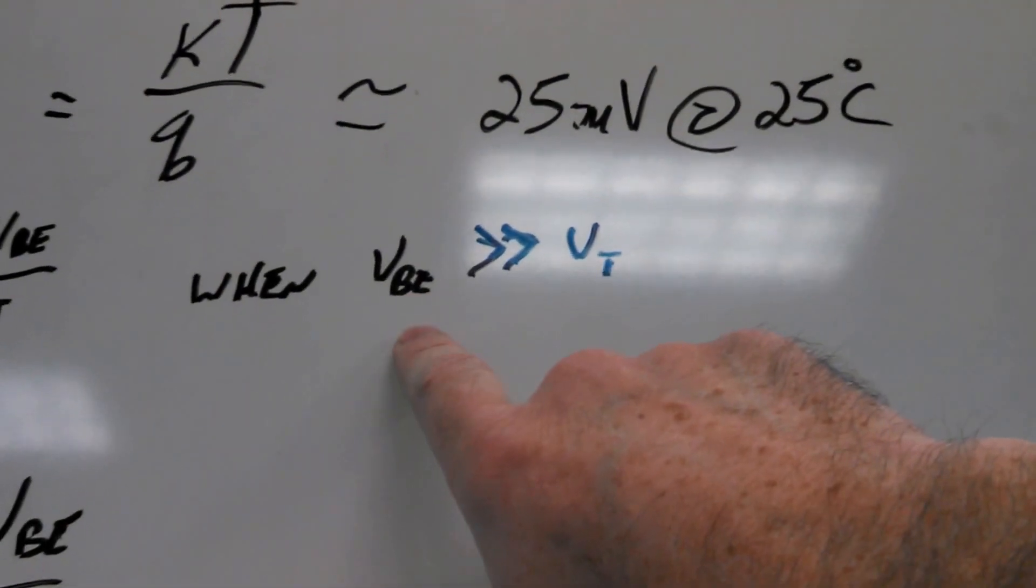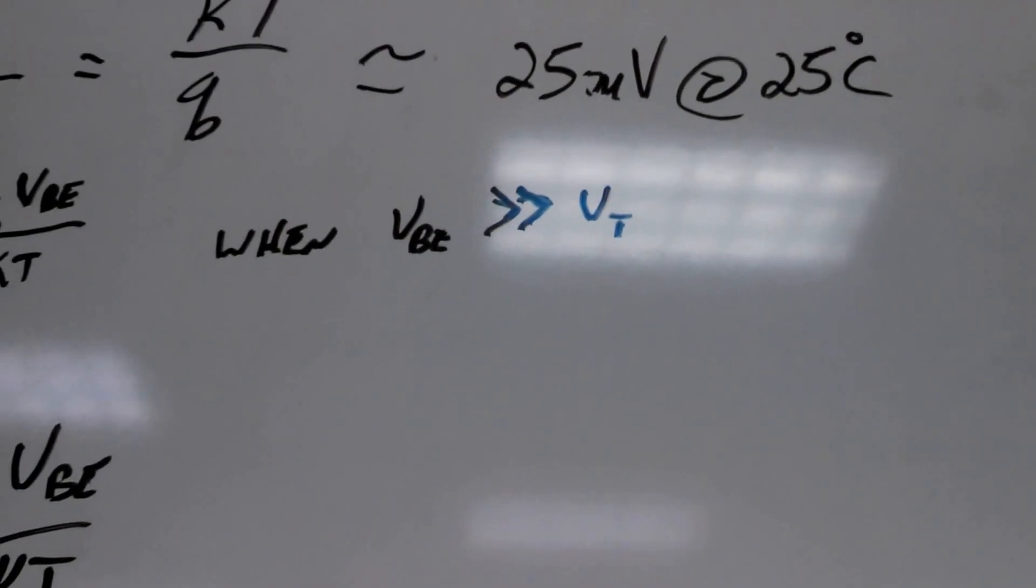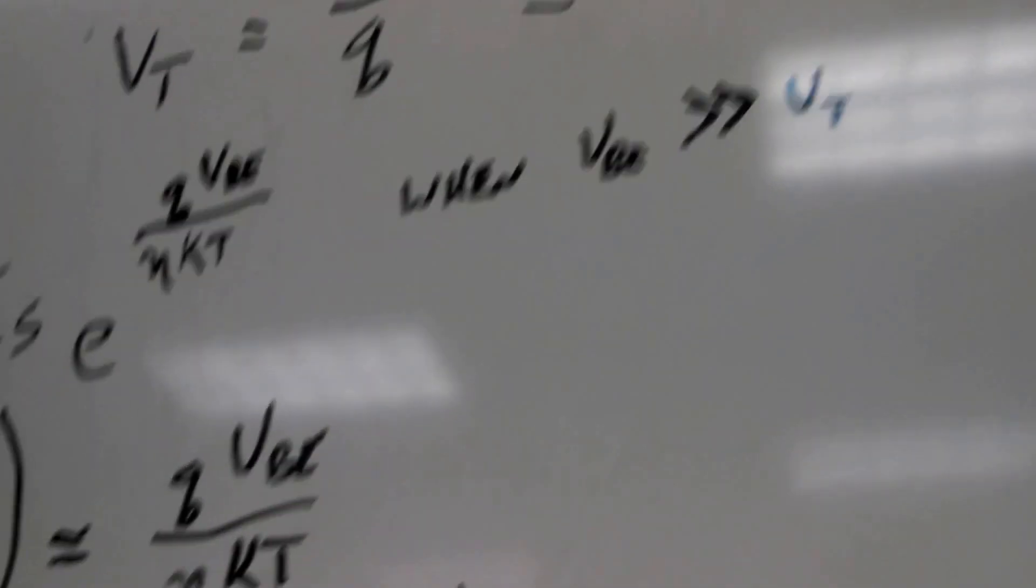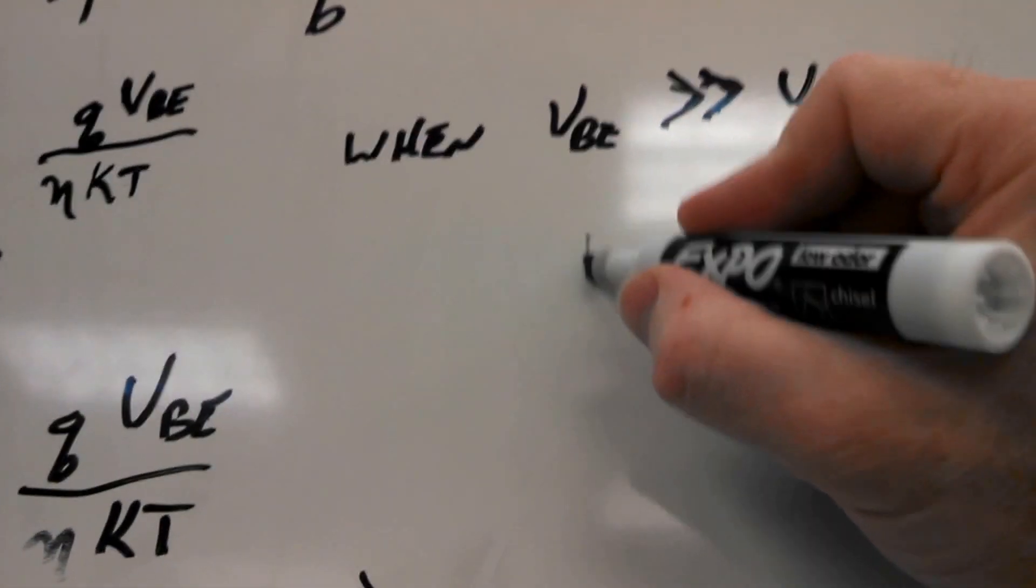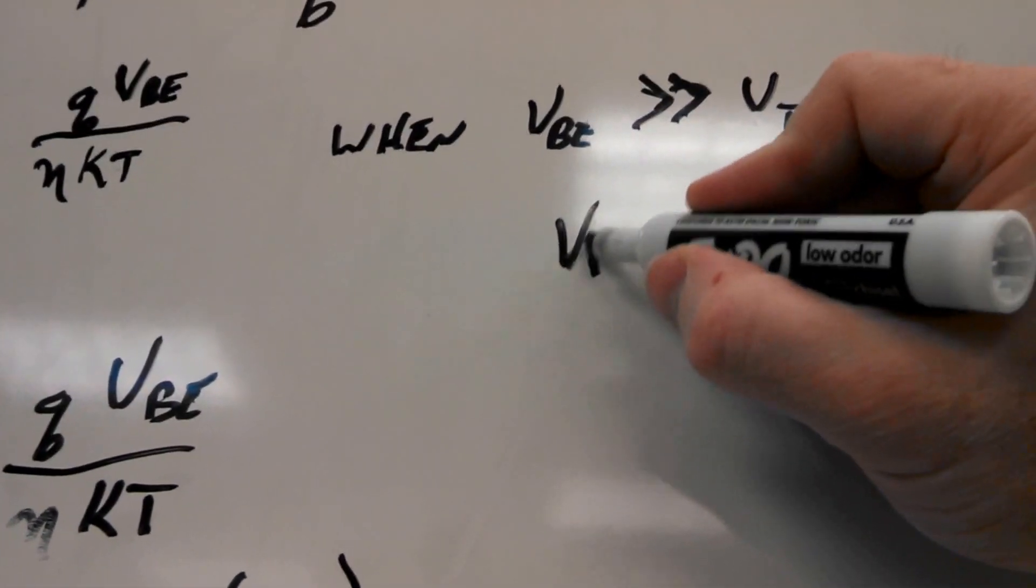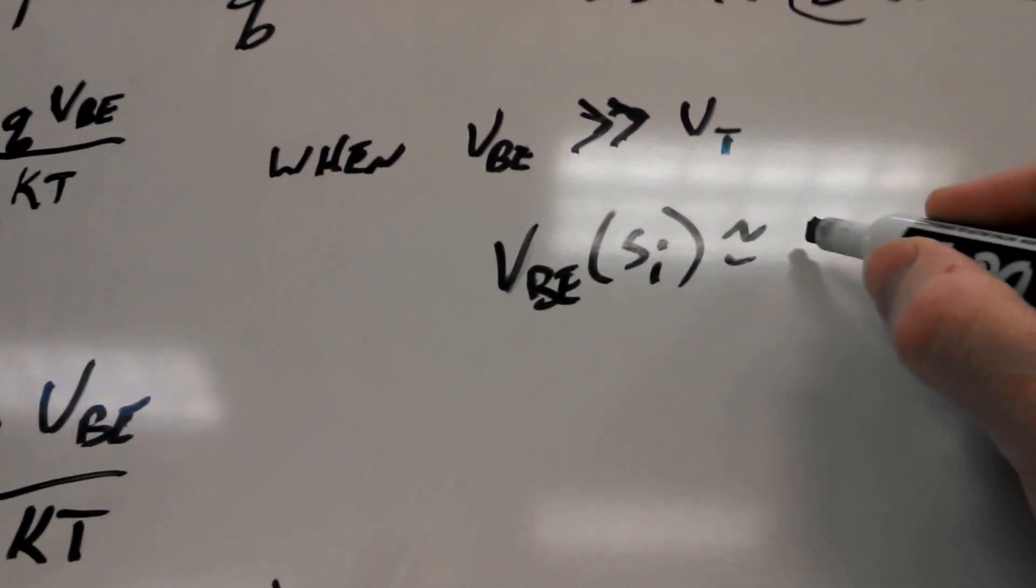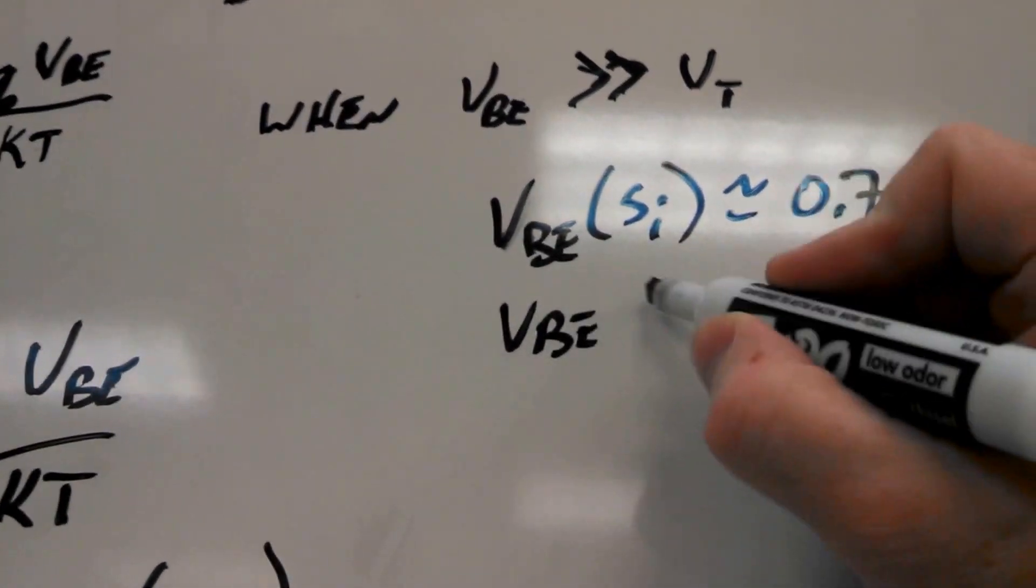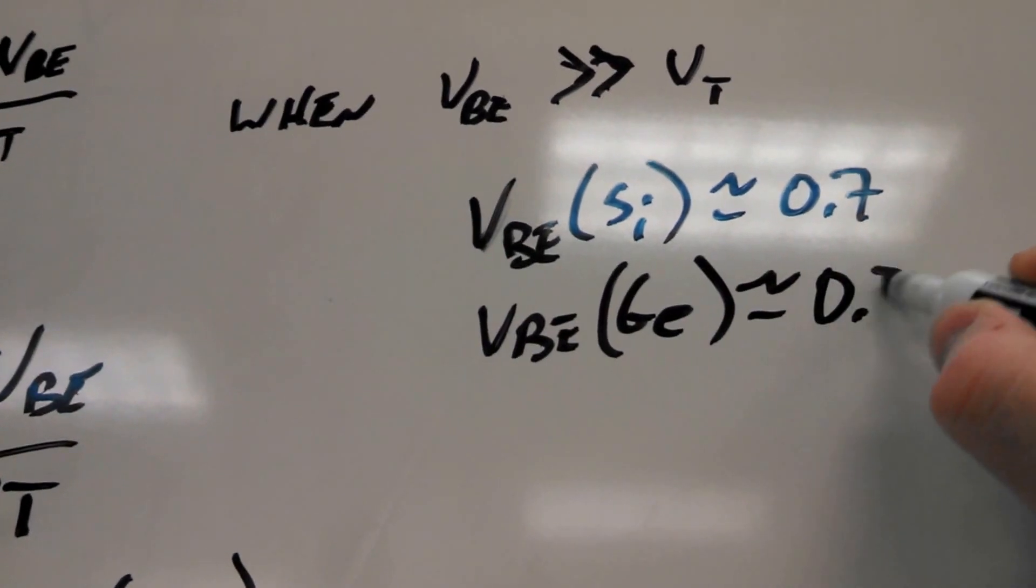When VBE is much greater than VT, it's usually about 0.7 volts for silicon and about 0.3 volts for germanium. So we'll write that on here too. VBE of silicon approximately equal to 0.7, and the VBE of germanium is approximately 0.3.